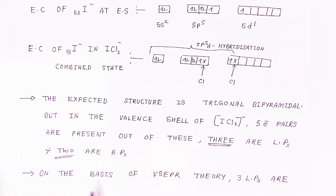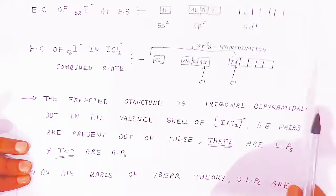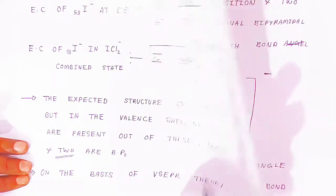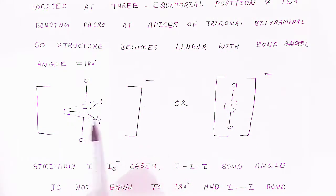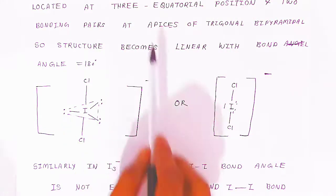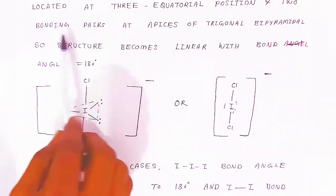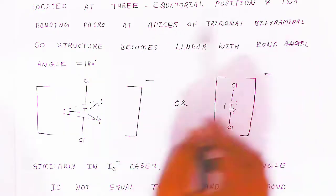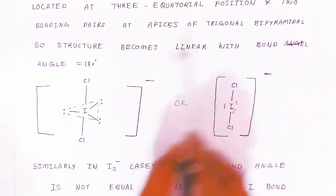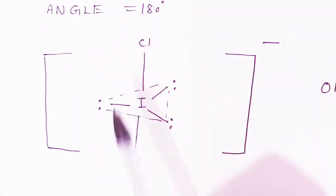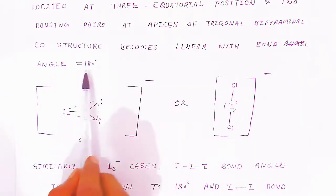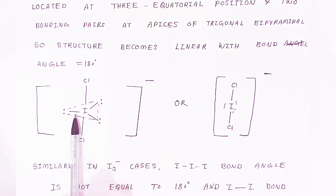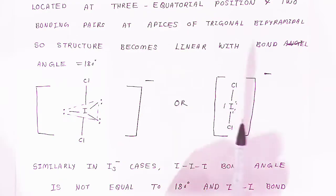On the basis of VSEPR theory, the 3 lone pairs are located at the 3 equatorial positions, and the 2 bonding pairs are at the apices of the trigonal bipyramidal structure. So the structure becomes linear with a bond angle of 180°.